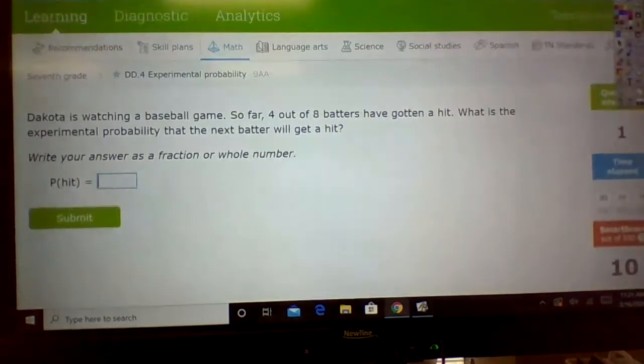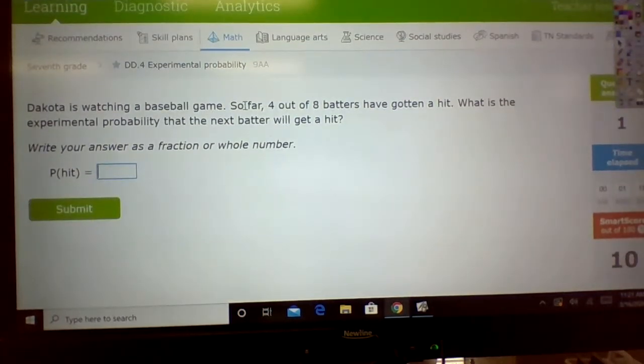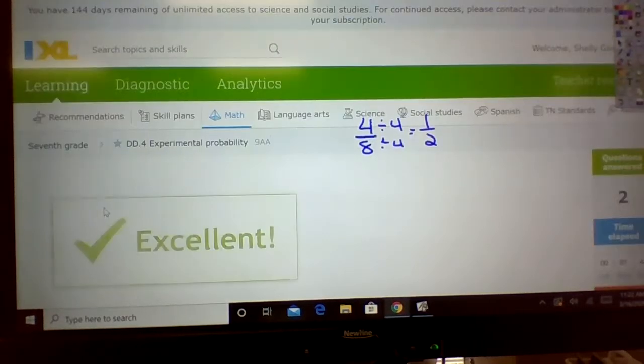Okay, let's look. Dakota's watching a baseball game. So far, four out of eight batters have gotten a hit. What is the experimental probability that the next batter will get a hit? Well, four out of eight. Reduce that by four, you're going to get one half. So he's got a 50-50 chance of getting a hit, is what that's saying.